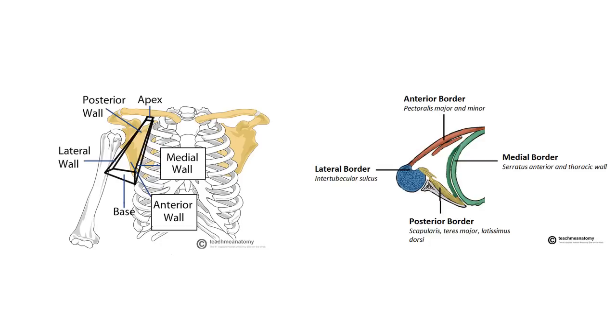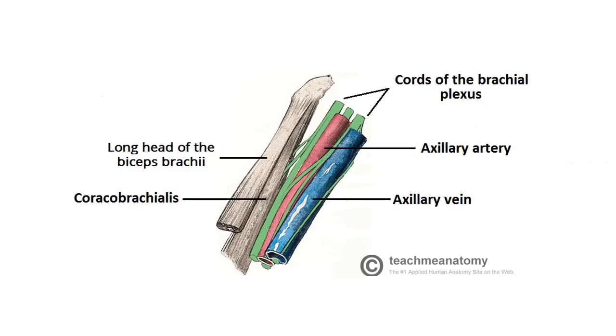The base of the axilla is formed by the skin and fascia of the armpit, and the apex is formed by the convergence of the first rib, the scapula, and the clavicle.